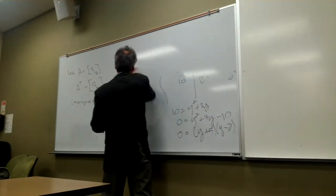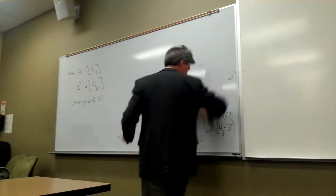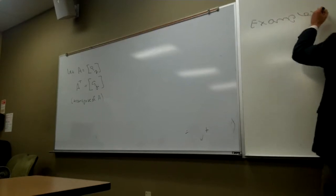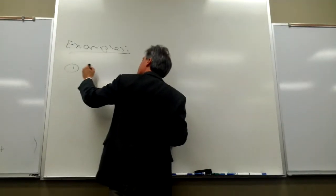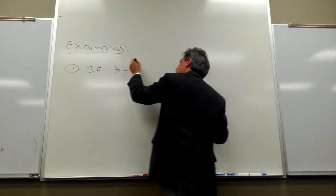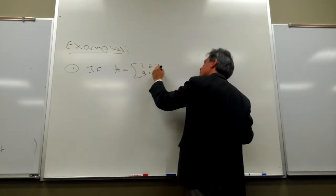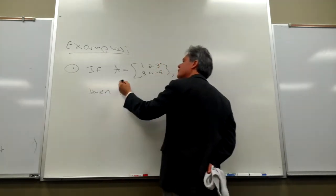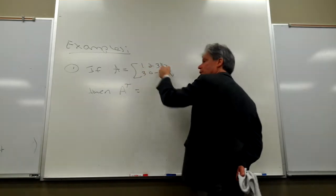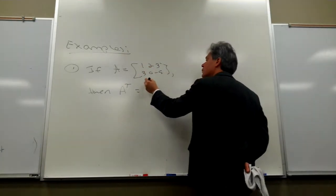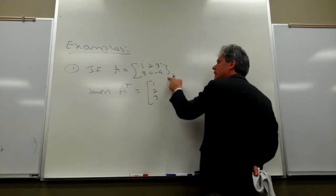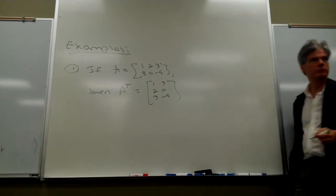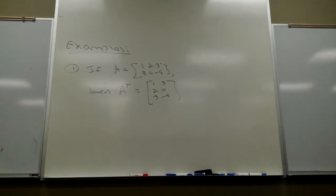A transpose of a matrix is merely the same old matrix, replacing a row with a corresponding column. Can I give you a quick example? If A is equal to 1, 2, 3 / 3, 0, negative 5, then correspondingly A's transpose is generated by taking A's first row and using it as the transpose's first column, and taking A's second row and using it as the second column of the transpose.